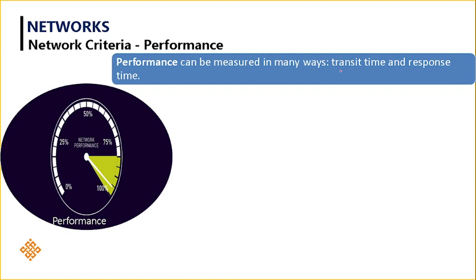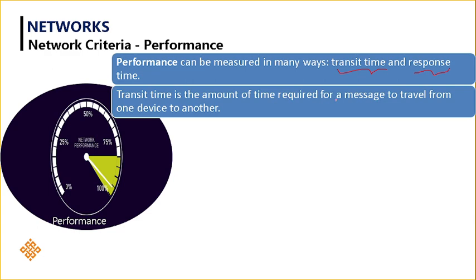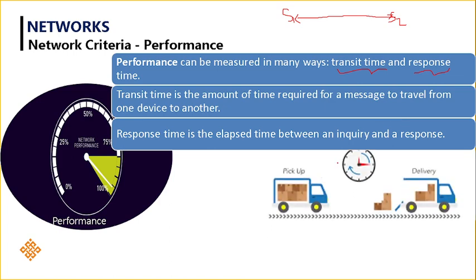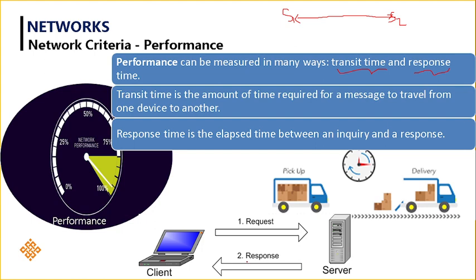In terms of transit time, also called transmission time - what is transit or transmission time? It is the amount of time required for a message to travel from one device to another device. For example, if there is system one and system two, the time taken to transfer the data from one system to the other is called transmission time. The second metric is response time, which is the elapsed time between an inquiry and a response - essentially the delay. This is how you can measure the performance of any system during data communication.